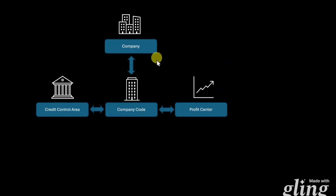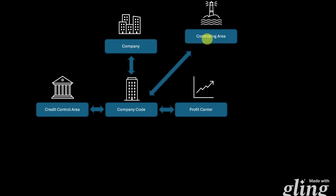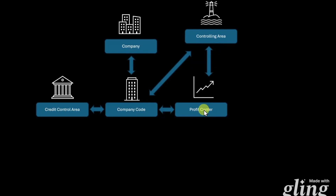Now we will leave the financial module a bit and see how the other modules integrate with finance. From the controlling perspective, we have the so-called controlling area — the central organizational object in controlling. You would need at least one controlling area to use the controlling module. This controlling area can be linked to one or even multiple company codes. The controlling area is also linked to the profit center, so whenever we create a profit center, we must state in which controlling area we want to create it.